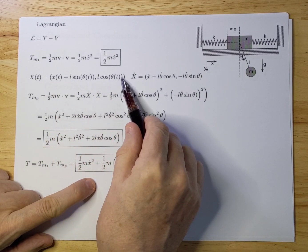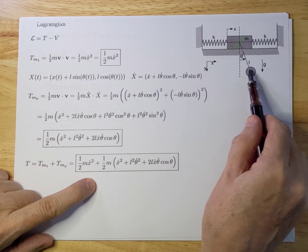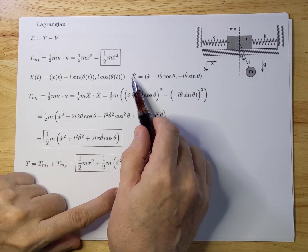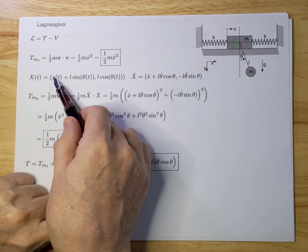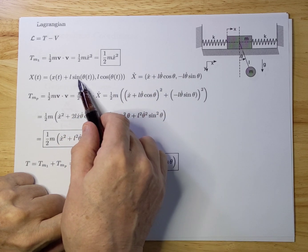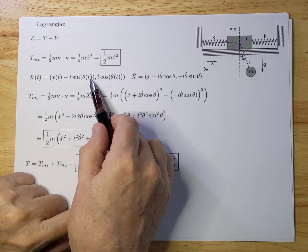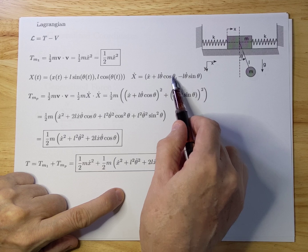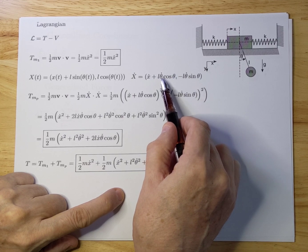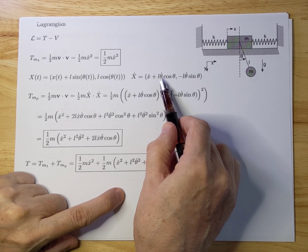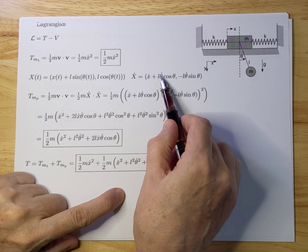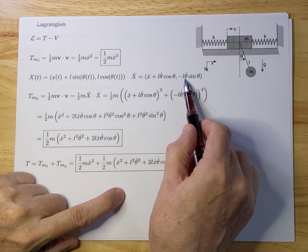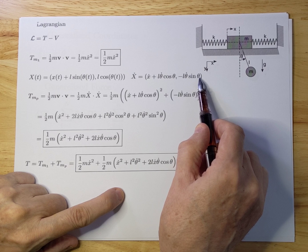Now we have the position of the mass hanging on the pendulum, so we can differentiate that to get the speed. Differentiating x gives x-dot. Then differentiating sine theta gives cosine theta, and since theta depends on time, by the chain rule you get d-theta/dt, which is theta-dot. You do the same for the y term, so you get minus L theta-dot sine theta.